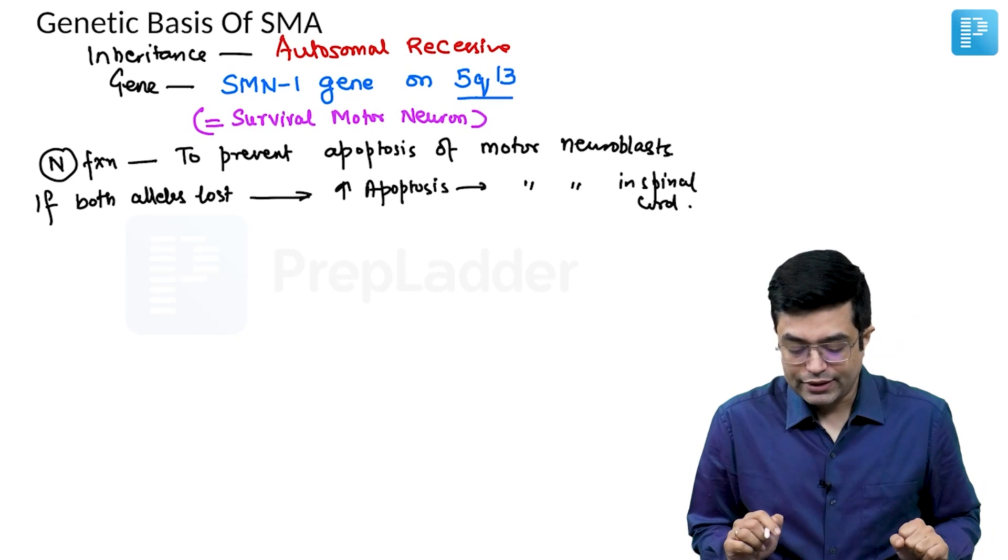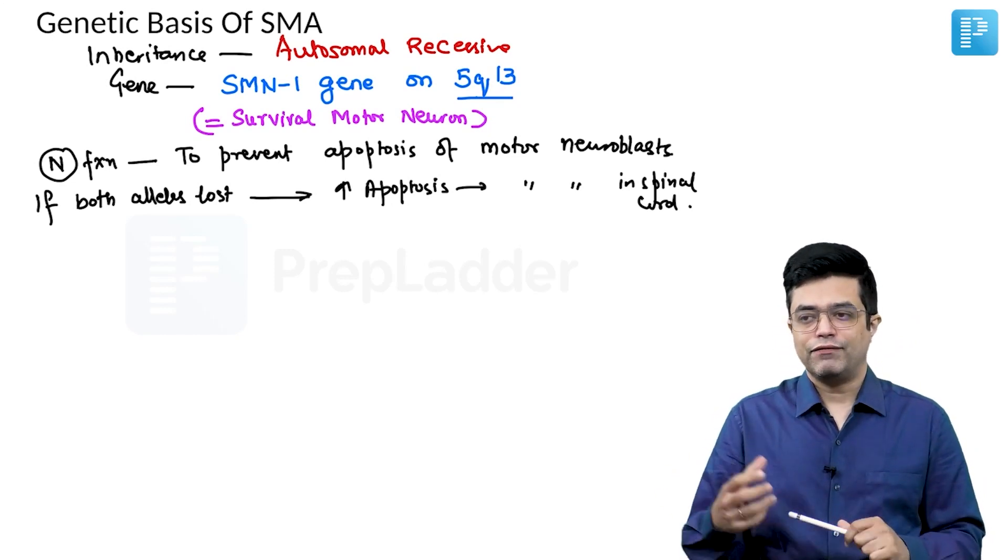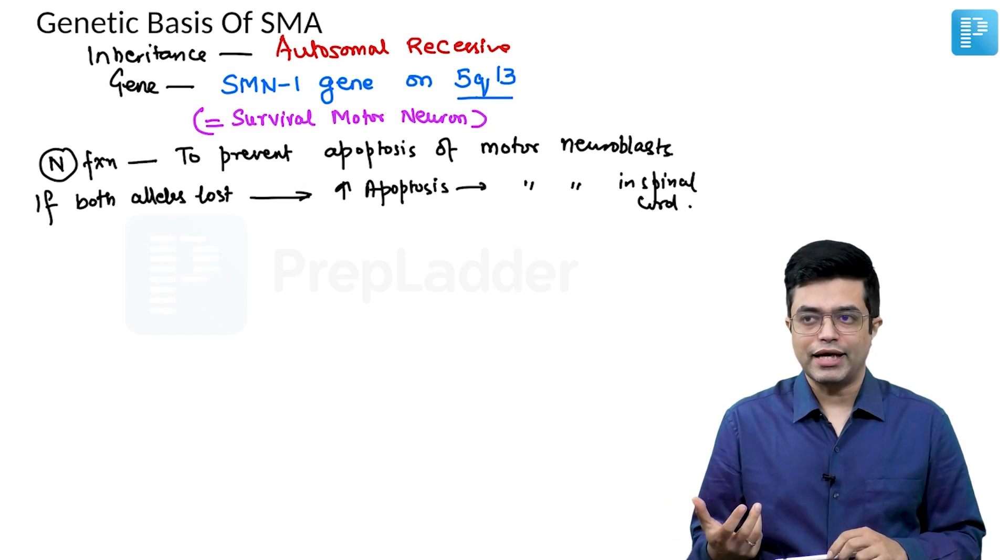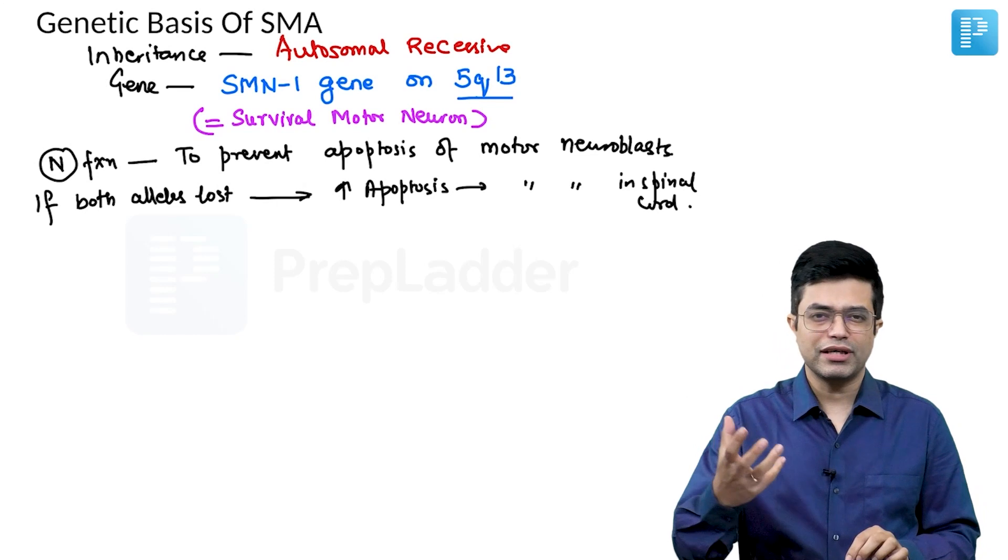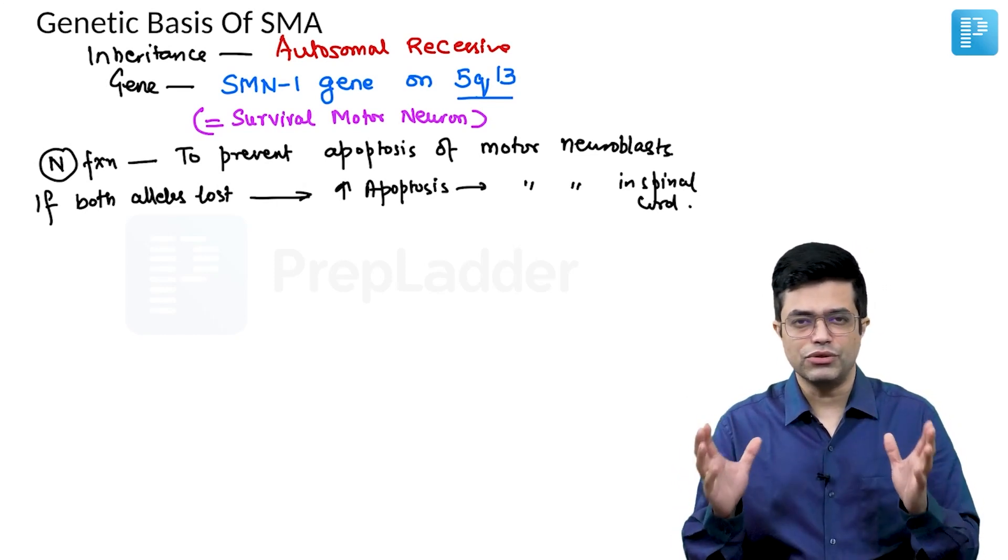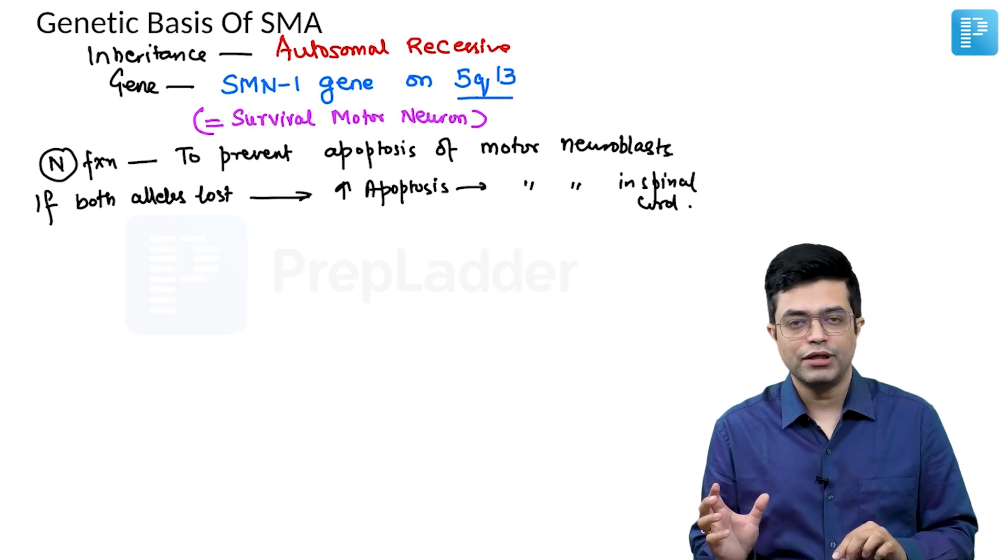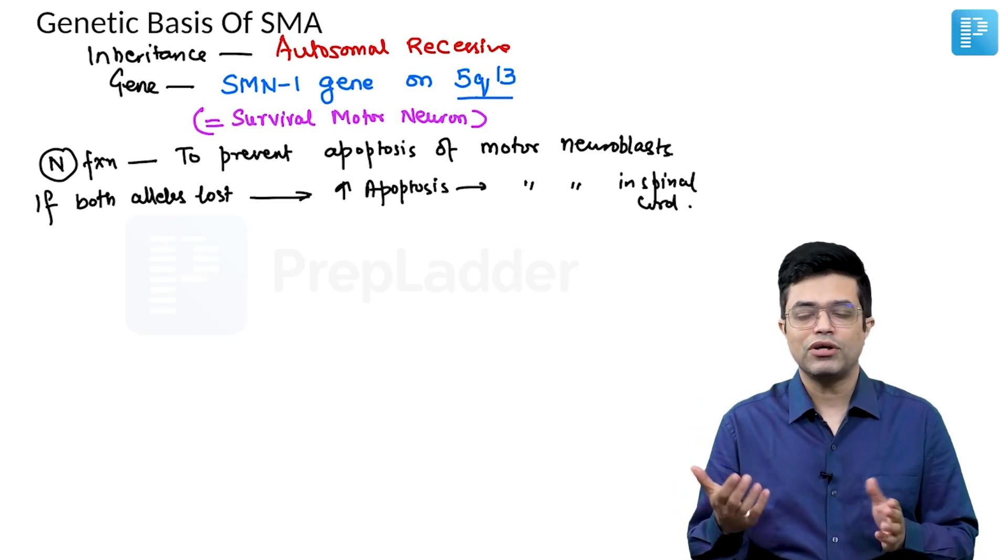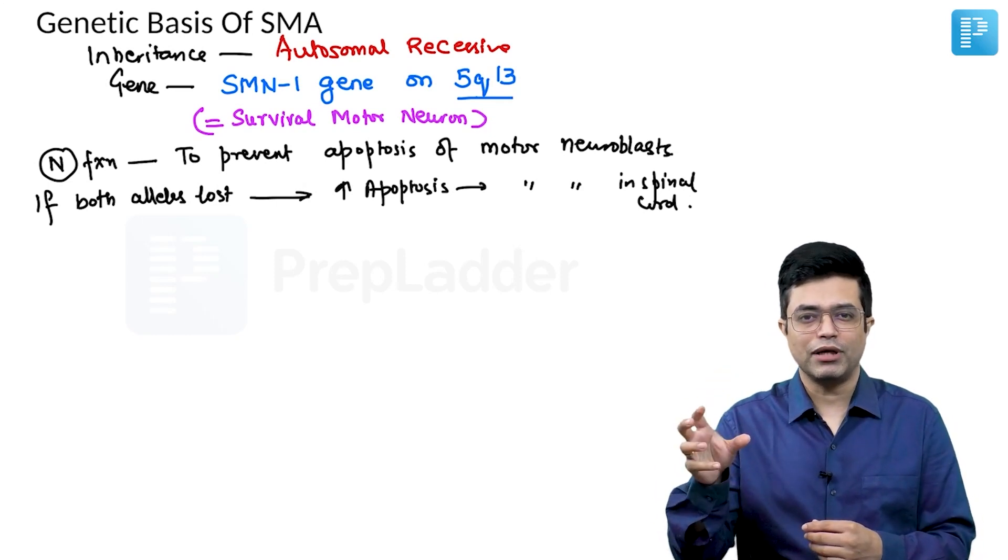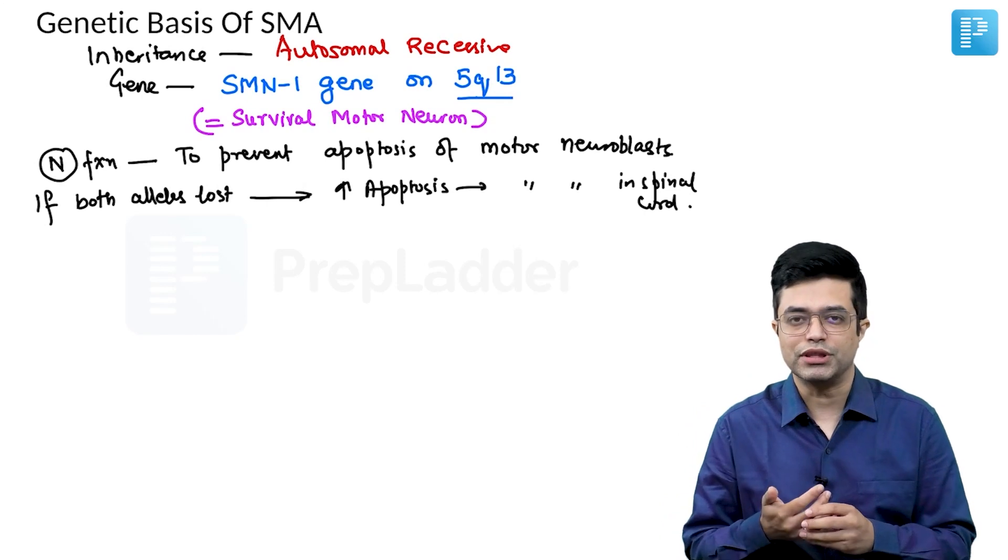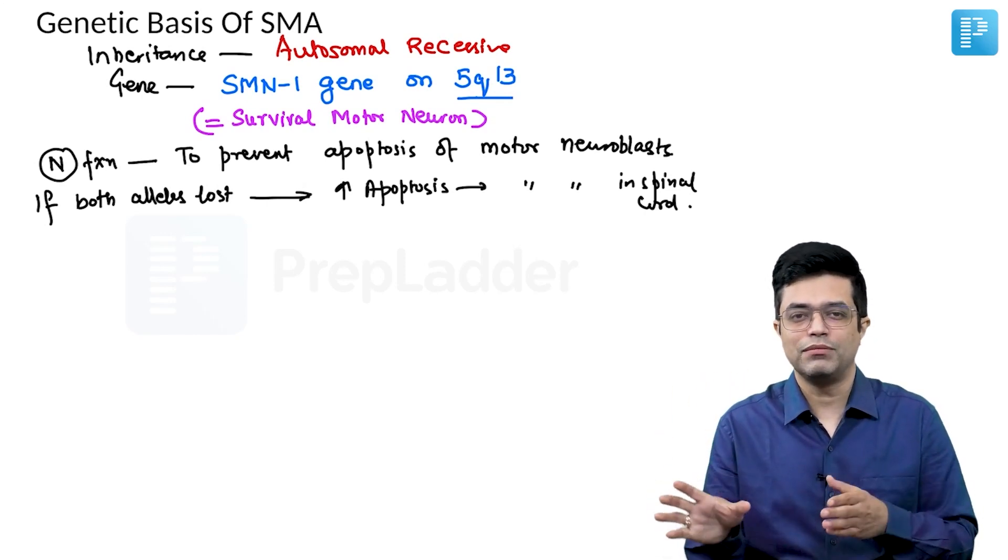You need to understand that when in utero the child is there and the neuroblasts are forming, neural crest derivatives and spinal cord is forming and all these neurons are forming. There is an excess of neuroblasts which are formed. Many of these neuroblasts are not needed in later life, so there is a process which begins in the excess neuroblasts. The process is called apoptosis. The extra neuroblasts basically tend to die, they are not needed by the body.